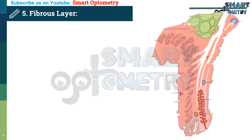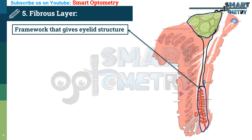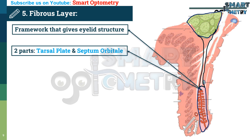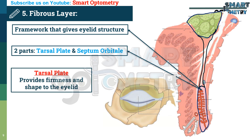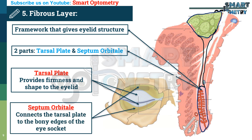Layer 5 – The Fibrous Layer. This is the framework that gives the eyelid its structure, divided into two main parts: the tarsal plate and the septum orbitale. The tarsal plate is a dense connective tissue that provides firmness and shape to the eyelid. Embedded within it are the meibomian glands, responsible for secreting oils to maintain tear film. The septum orbitale is a thin membrane that connects the tarsal plate to the bony edges of the eye socket.